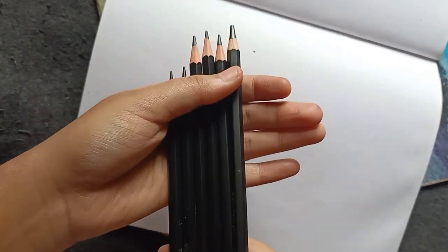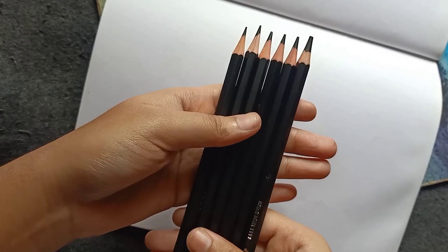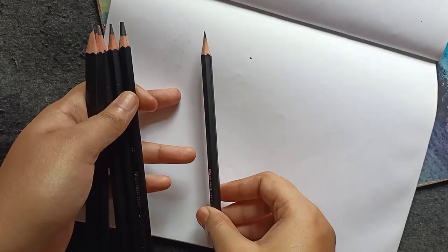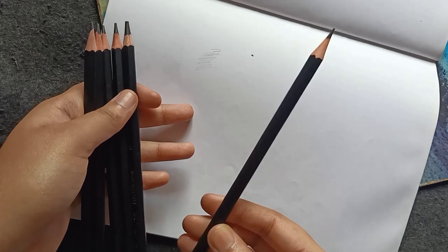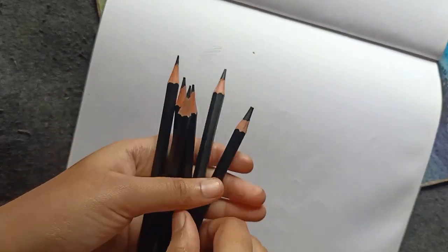This is a good effect. This is an HB pencil. Next is a 2B pencil. I'm going to use the outline of HB and 2B pencil.